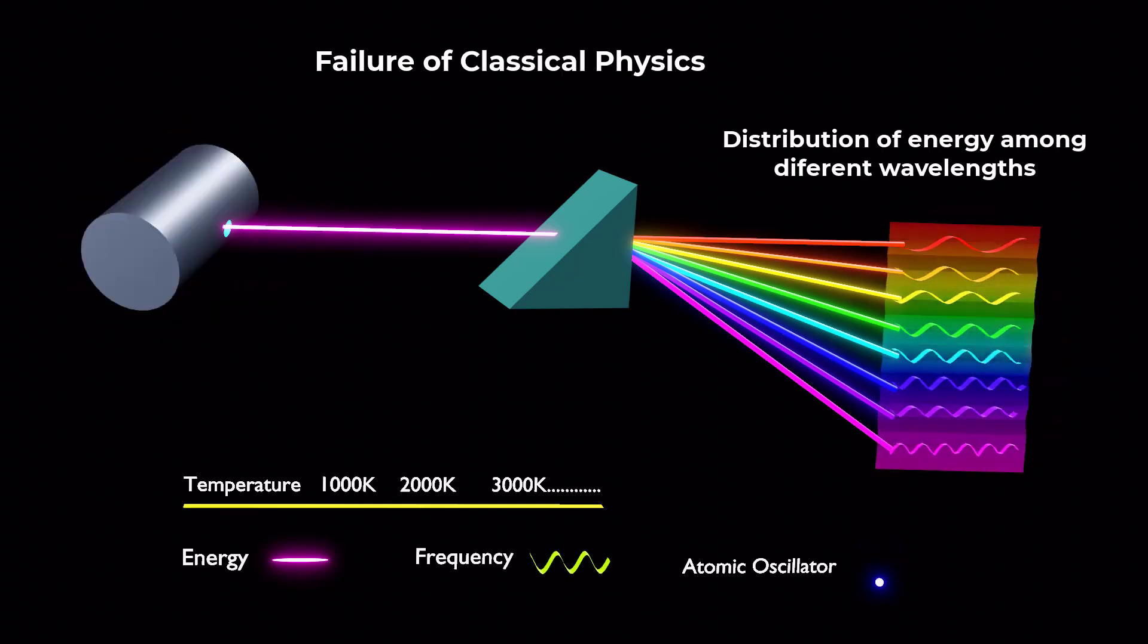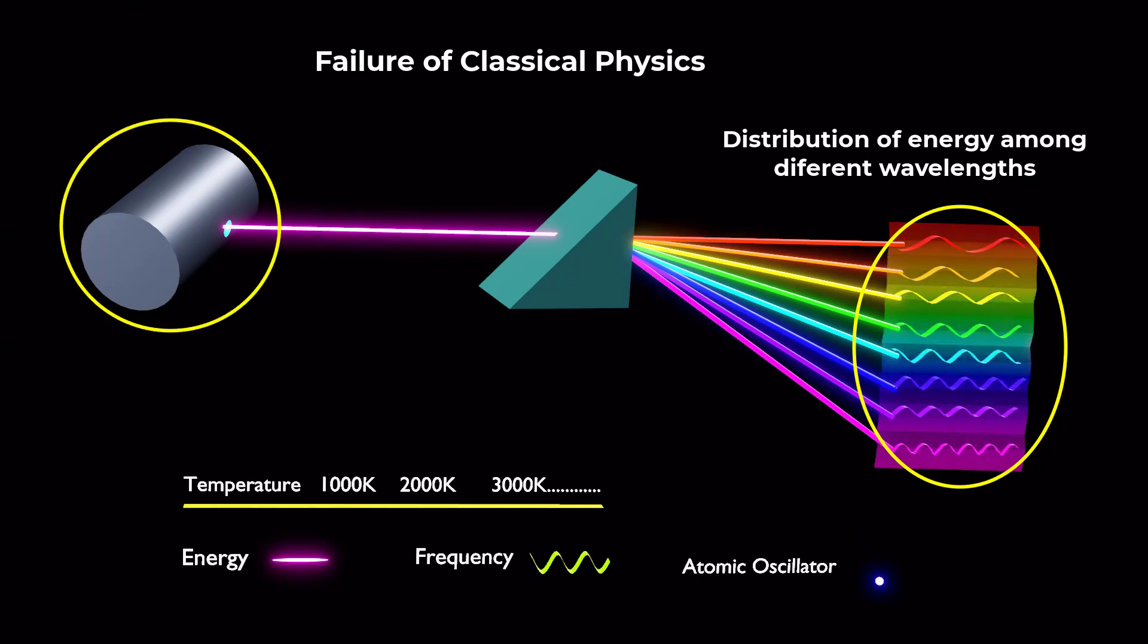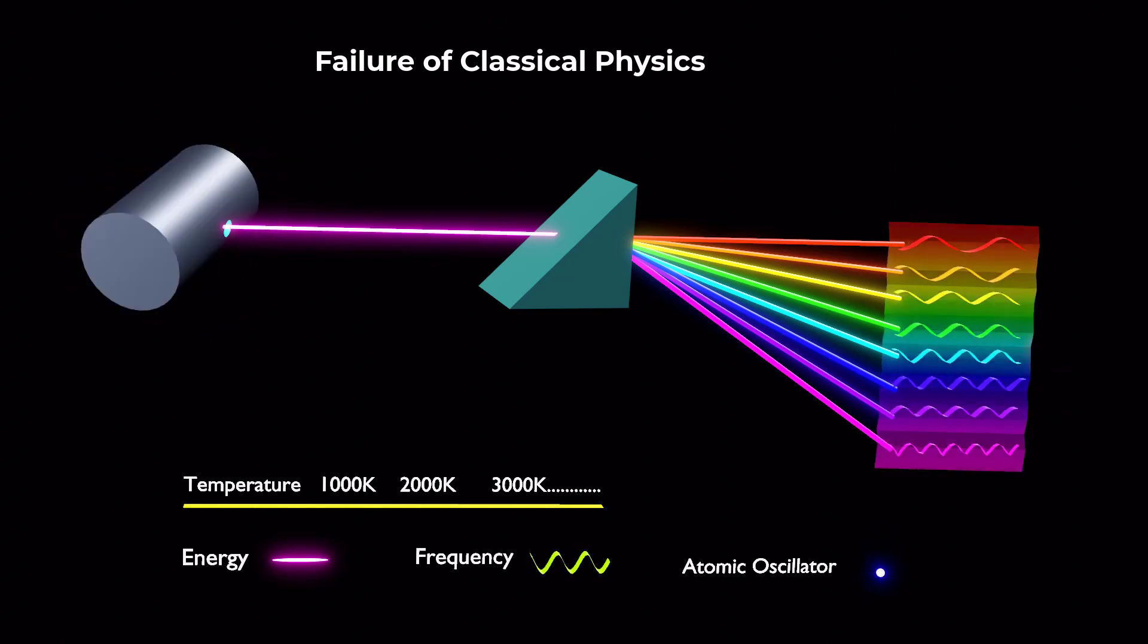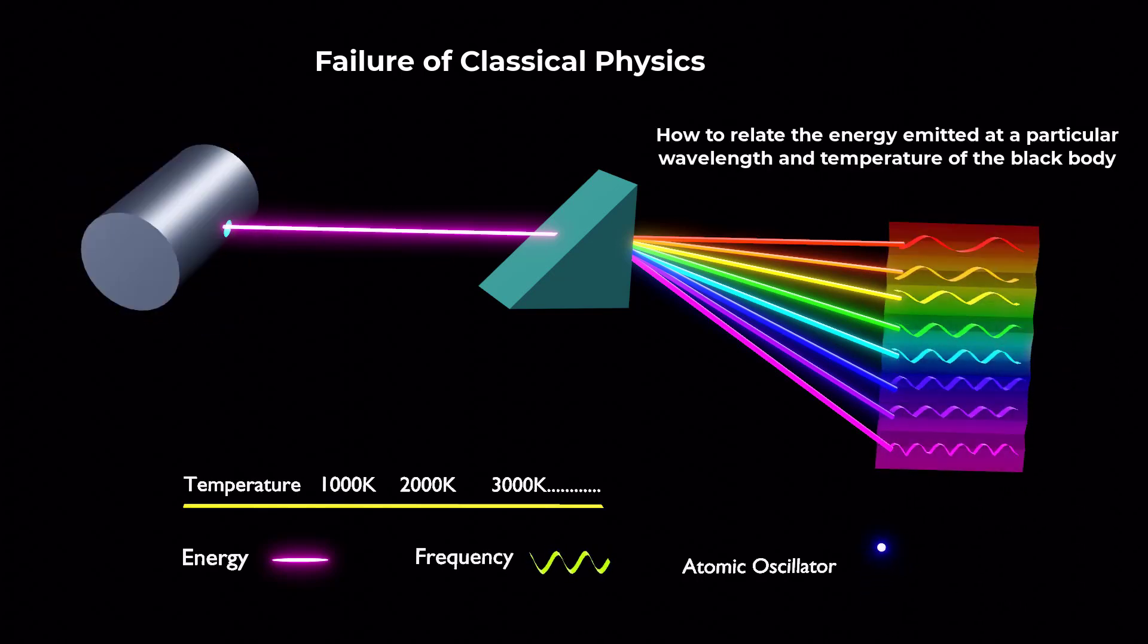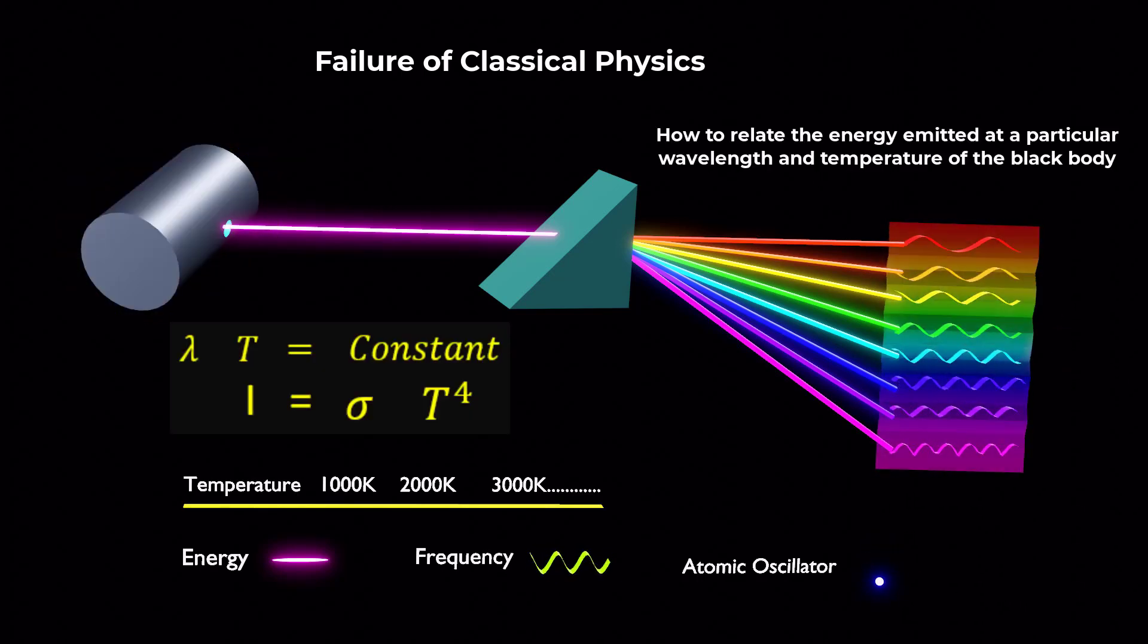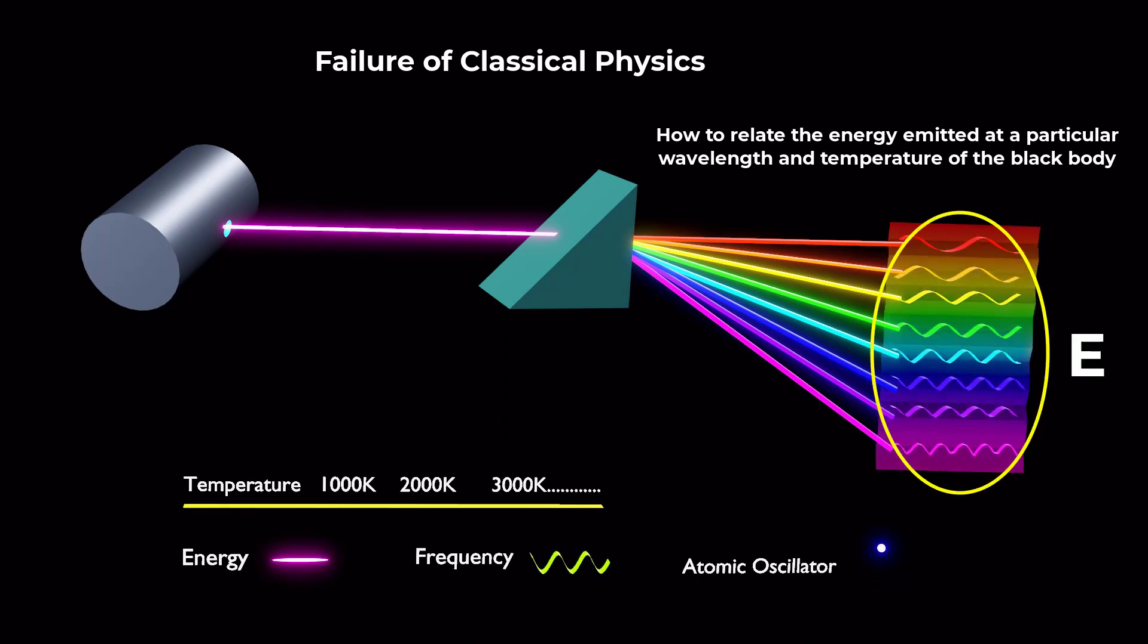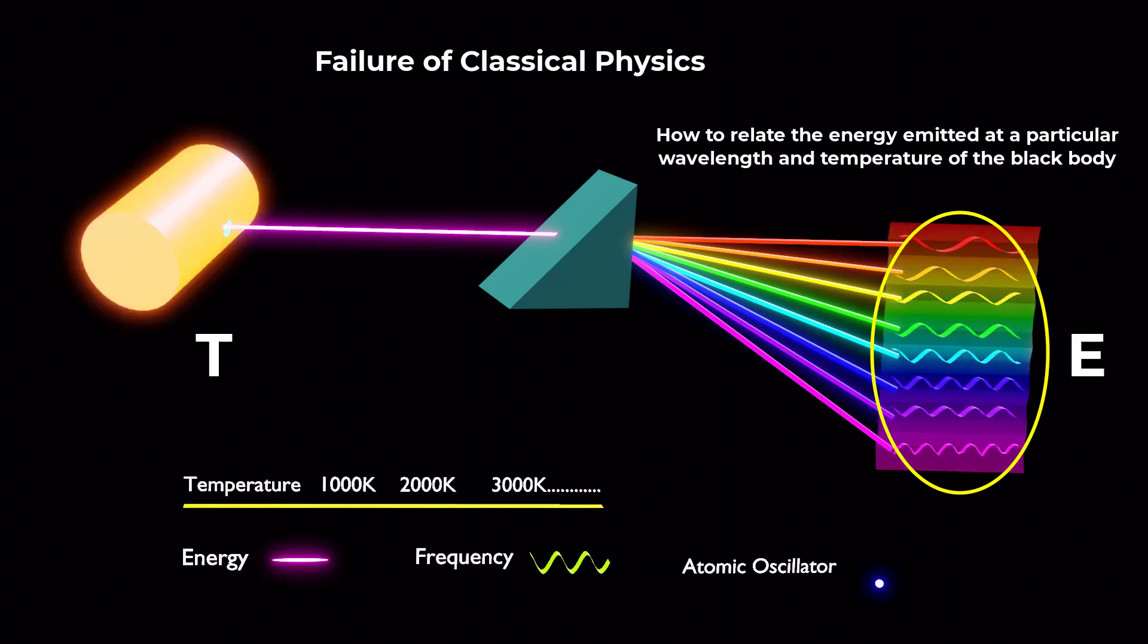Classical physics attempted to predict the distribution of energy among all possible wavelengths emitted by a black body at a specific temperature. The challenge was to find a formula or equation that accurately represents the relationship between the energy emitted at different wavelengths and the temperature of the black body.